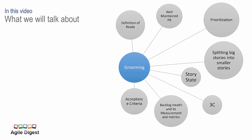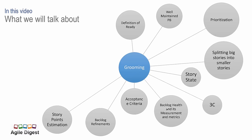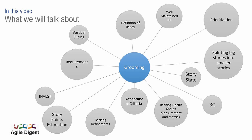We'll try to understand what acceptance criteria is and what backlog refinement means — that's actually the entire grooming session, and we call it grooming or backlog refinement. We'll talk about story point estimations, the INVEST acronym, understanding requirements and vertical slicing. We also have something called DEEP, used when calculating product backlog maturity. Okay, everyone ready — let's begin.